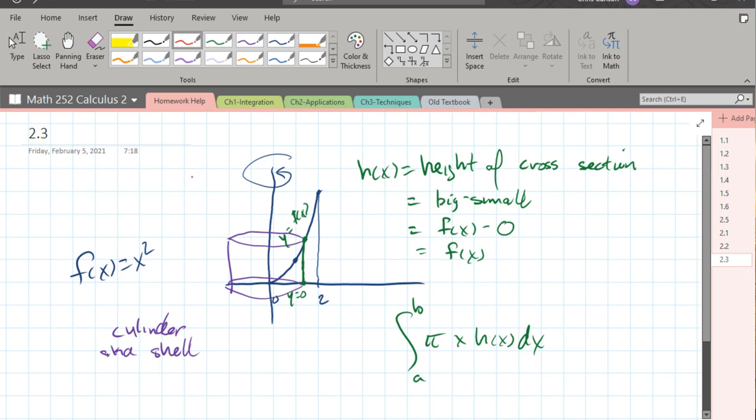if I wanted to go back and use the 2.2 methods, I'd have to have my cross section be perpendicular to my axis of rotation.